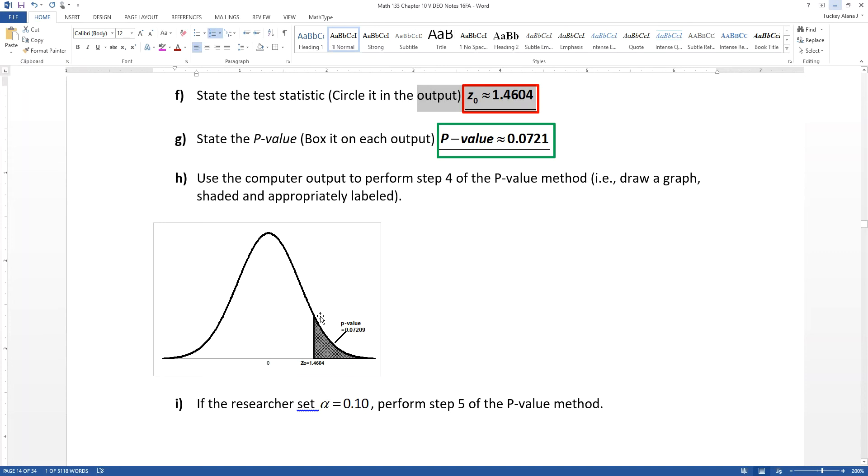Since the curve is already drawn for you, then it becomes important to know how much to shade and label everything appropriately. So this is Z₀, which is your test statistic, and there's your p-value labeled.